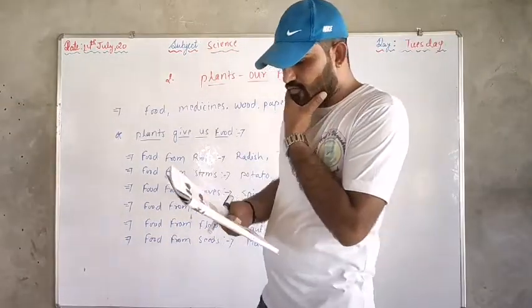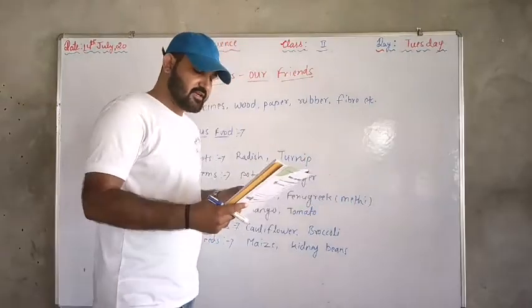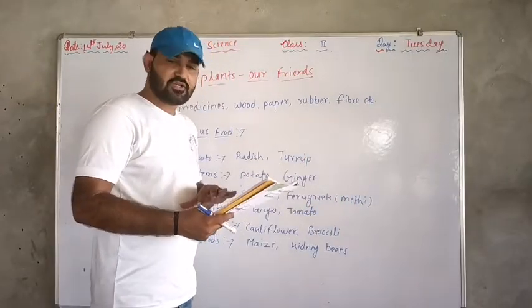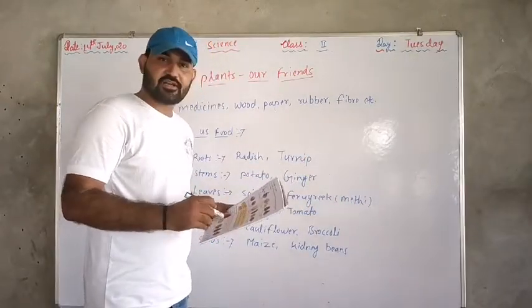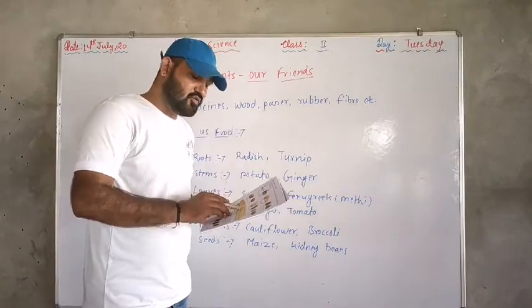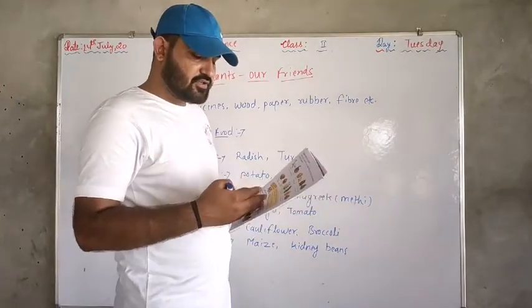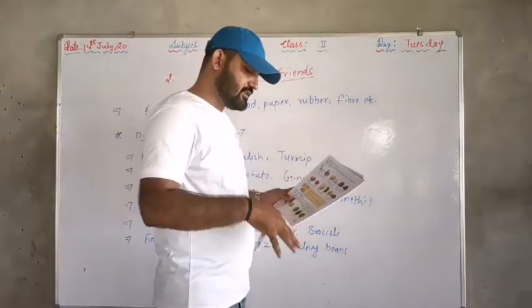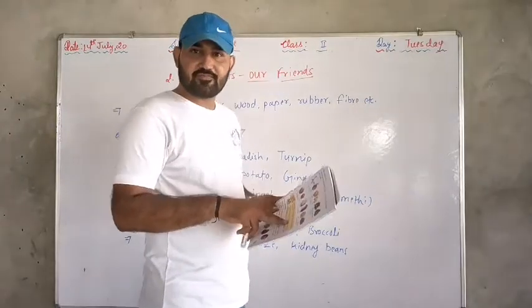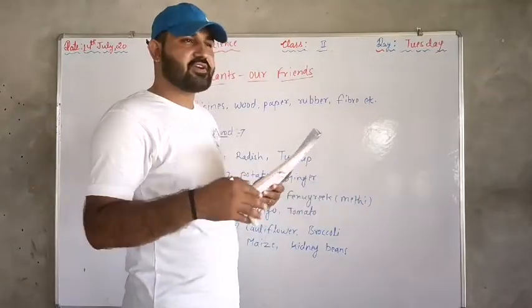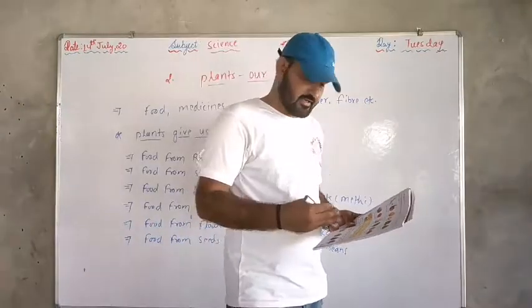Now note this: potato and ginger grow below the ground — aloo and adrak. They are growing in the ground. But they are actually stems.